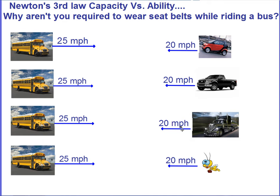The idea behind capacity versus ability is that this bus has a tremendous capacity to exert force. It's got a lot of mass and a lot of speed. The faster it's moving, the more likely it's going to exert more force when it collides with something. The more massive it is, the more force it will exert.